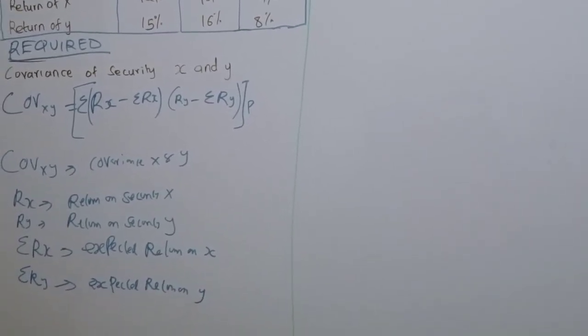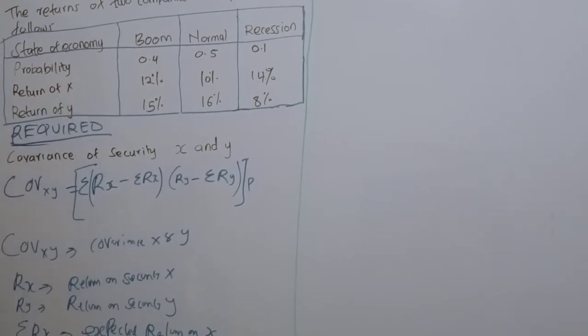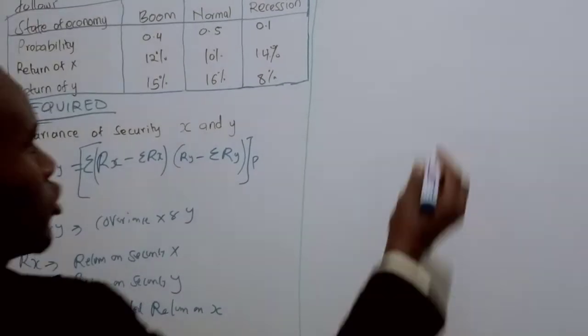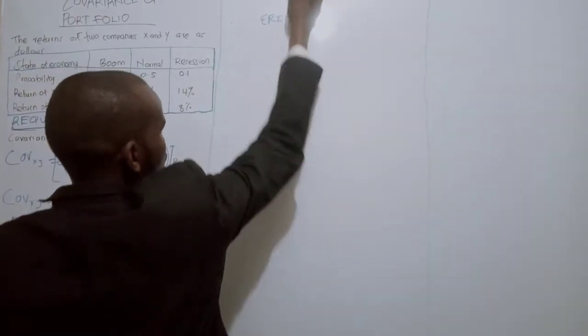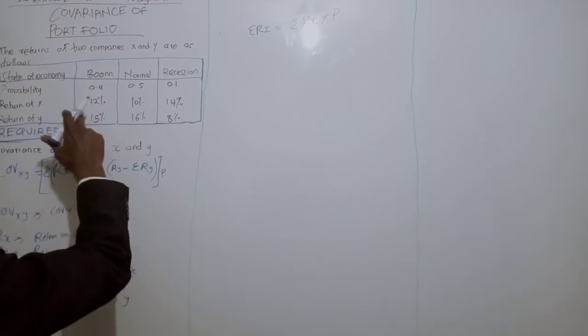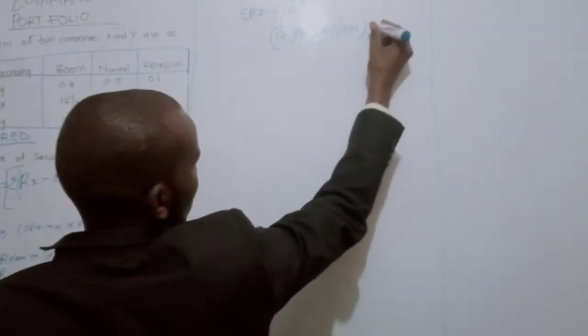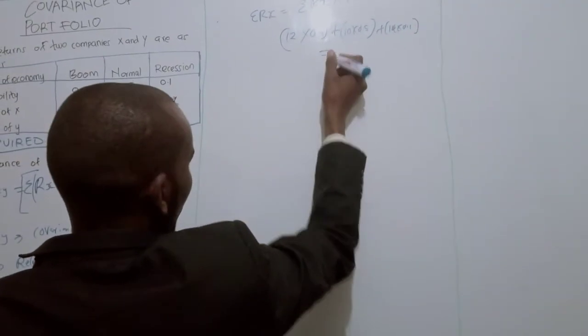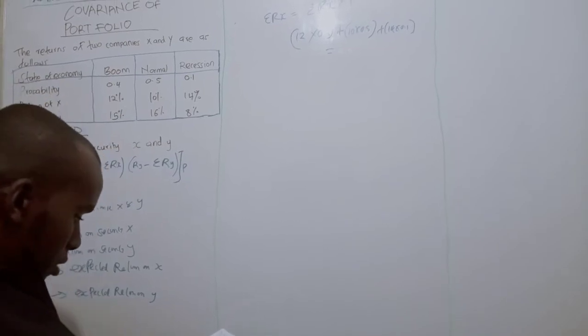Now it means we need to calculate the expected return. To calculate the expected return, we take the probability and multiply by the return. Let's first calculate the expected return of X, which is the summation of return of X times probability. When the return of X is 12, the probability is 0.4; when the return is 10, the probability is 0.5; when the return is 14, the probability is 0.1. If you work this out, you get 11.2%.